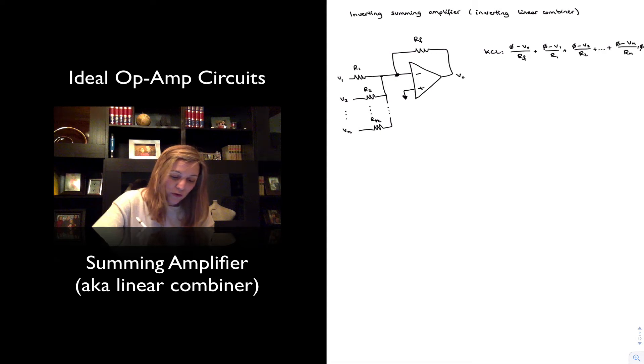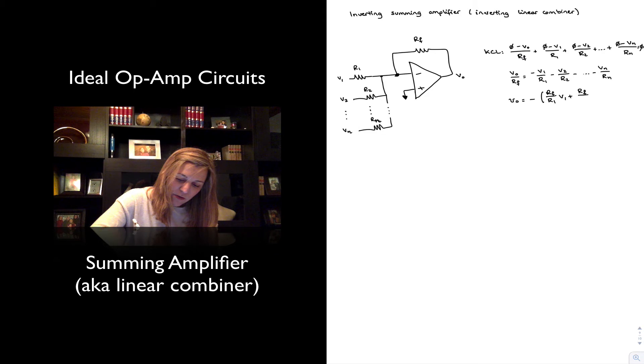And so, I can solve for Vout. Vout over RF is then equal to negative V1 over R1 minus V2 over R2 minus dot dot dot, VN over RN. And so I can express Vout as being equal to negative RF over R1 times V1 plus RF over R2 times V2 plus RF over RN times VN.